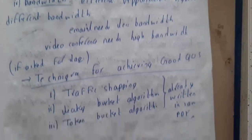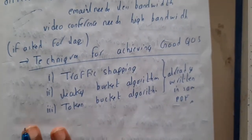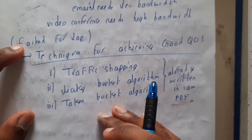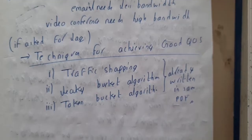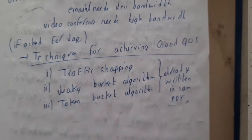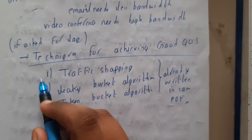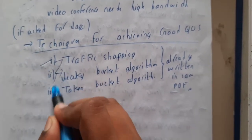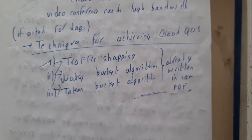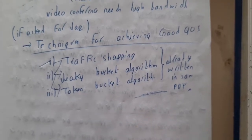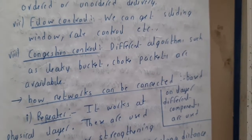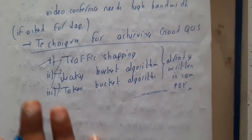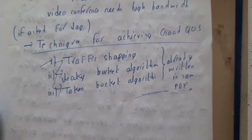Sometimes in examinations they will ask about techniques for achieving good quality of service. In that situation, write about traffic shaping — we discussed leaky bucket and token bucket. In the next lecture we are going to start the second unit, which is the network layer, and we'll be discussing about the internet. Thank you, thanks for watching.